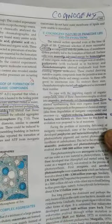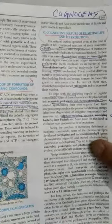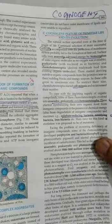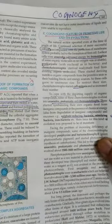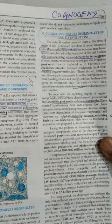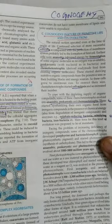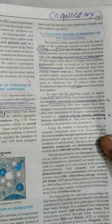So complex aggregates were formed. That is called cognogenity. Cognogenity means nature of primitive life and its evolution.